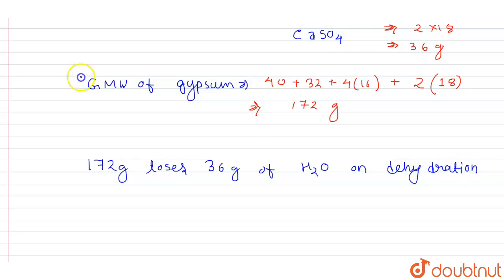So percentage weight loss will be loss upon initial, and that is 36 divided by 172 grams, and loss is 36 grams into 100, as it is percentage loss.